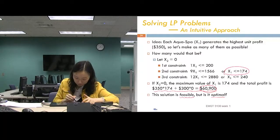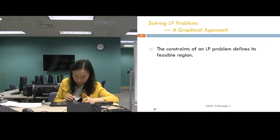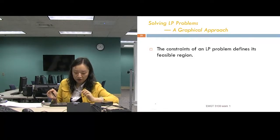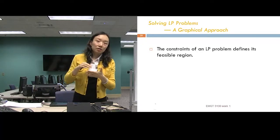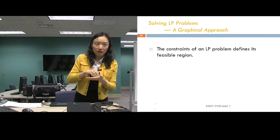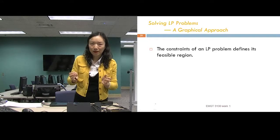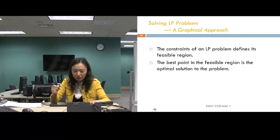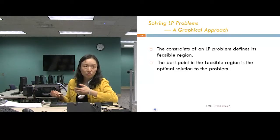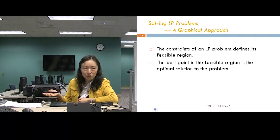A feasible solution satisfies all constraints. Whether it's optimal depends on whether we can find a better solution. The constraints of all LP problems define the feasible region — the collection of all feasible solutions. The best point in this feasible region gives the optimal solution. When solving an OR problem, we're trying to find the point that maximizes or minimizes the objective function.